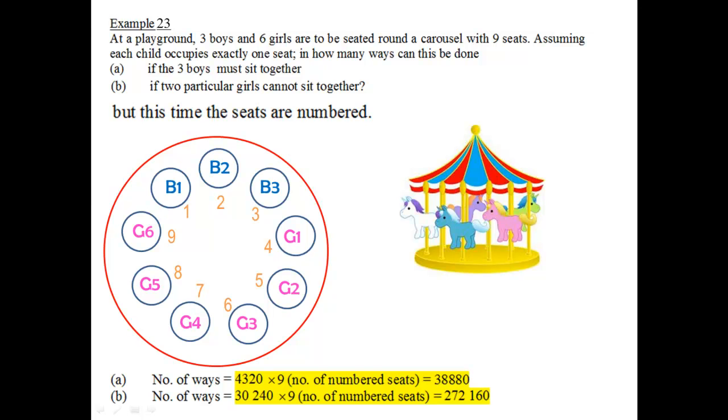So that's the effect of having seats numbered 1 to 9, which means that now I need to account for these numbered seats. Therefore, for part (a), I'm going to take the earlier answer for part (a), multiply by 9 to account for the numbered seats, giving us this as the answer.